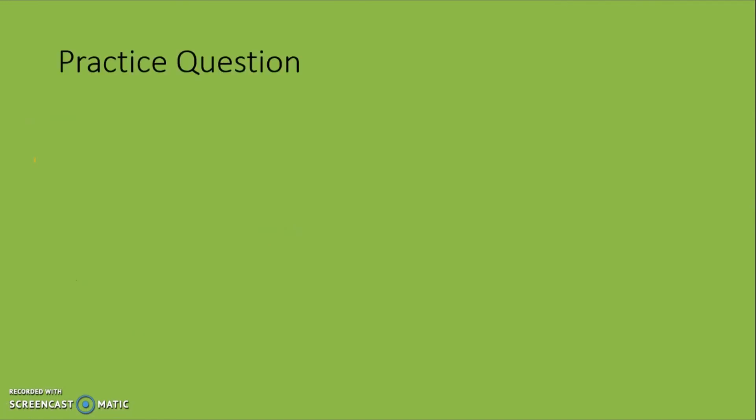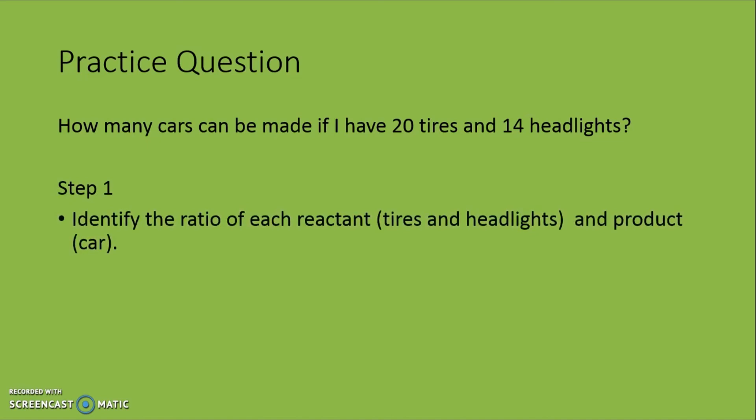Now, let us look at another example. This time, you will carry out the necessary calculation in the worksheet given to you. How many cars can be made if I have 20 tyres and 14 headlights? What do you do for the first step? You first identify the ratio of each reactant. In this case, it is the ratio between the tyres and the headlights and the product formed which is a car.